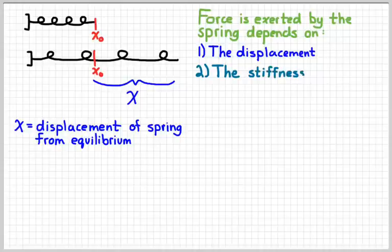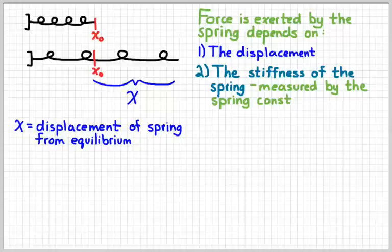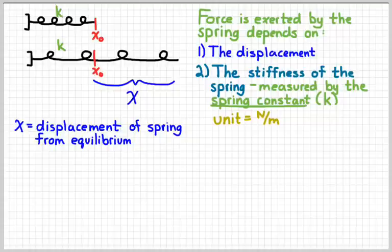The second thing, or the second factor that affects the force is just the properties of the spring itself. Kind of another way of saying that is how stiff the spring is. The way that we measure that is by something called the spring constant, which we give the symbol K. K for constant. And that quantity would be measured in the unit of newtons per meter.